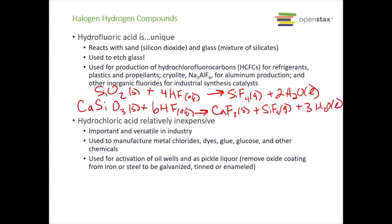Hydrochloric acid is relatively inexpensive and very widely used in industry and in the lab. It is used to make metal chlorides, dyes, glue, glucose, and other chemicals. It's used to activate oil wells, and as pickle liquor — used to remove the oxide coating from iron or steel to be galvanized, tinned, or enameled.